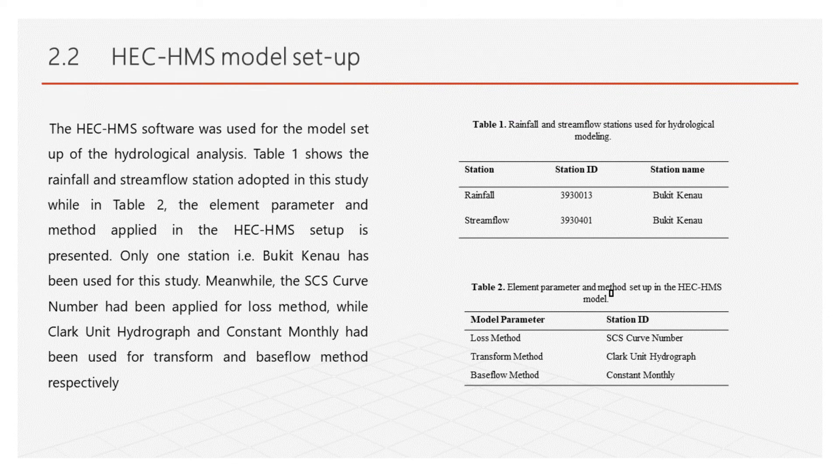Section 2.2 covers the HMS Model Setup. The HMS software was used for the model setup of the hydrological analysis. Table 1 shows the rainfall and streamflow stations adopted in the study, while Table 2 presents the element parameters and methods applied in the HMS setup. The only station at Bukit Canal has been used for the study. The SCS curve number was applied for the loss method, while the Clark unit hydrograph and constant monthly method were used for the transform and baseflow methods, respectively.